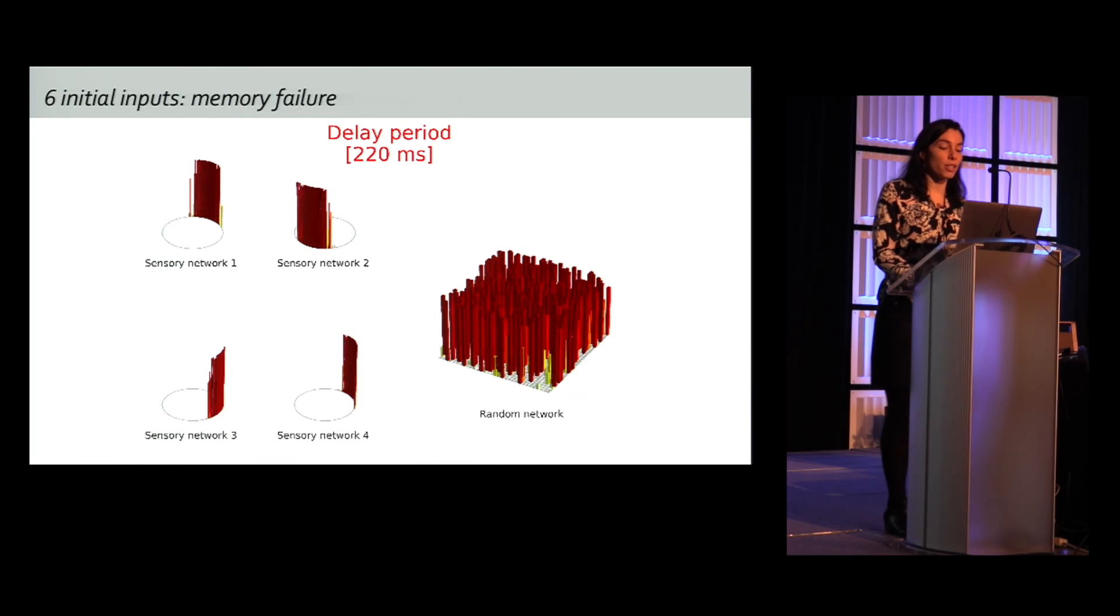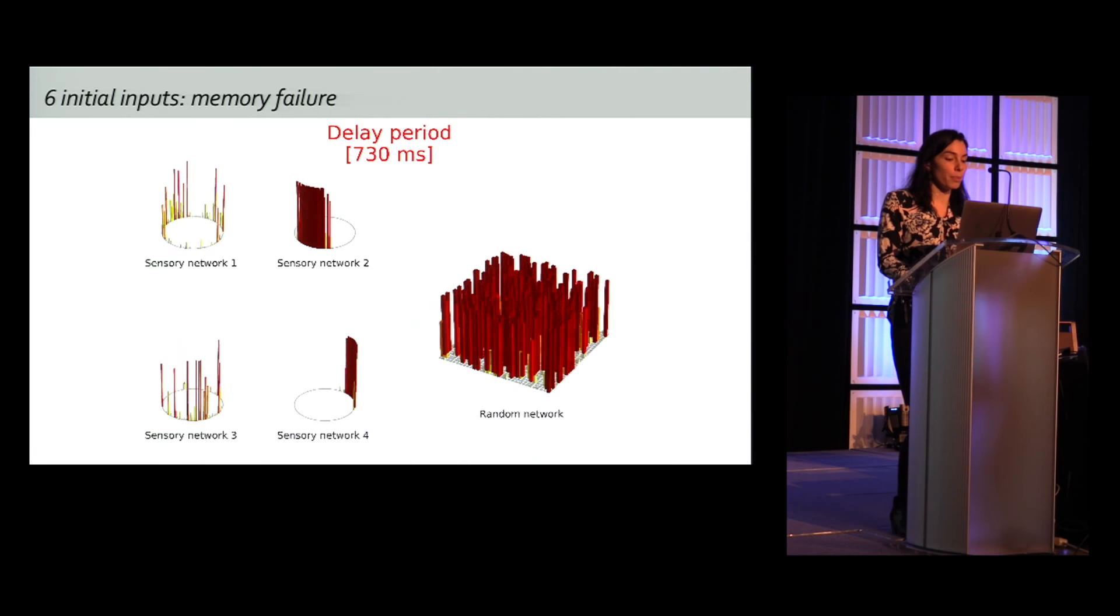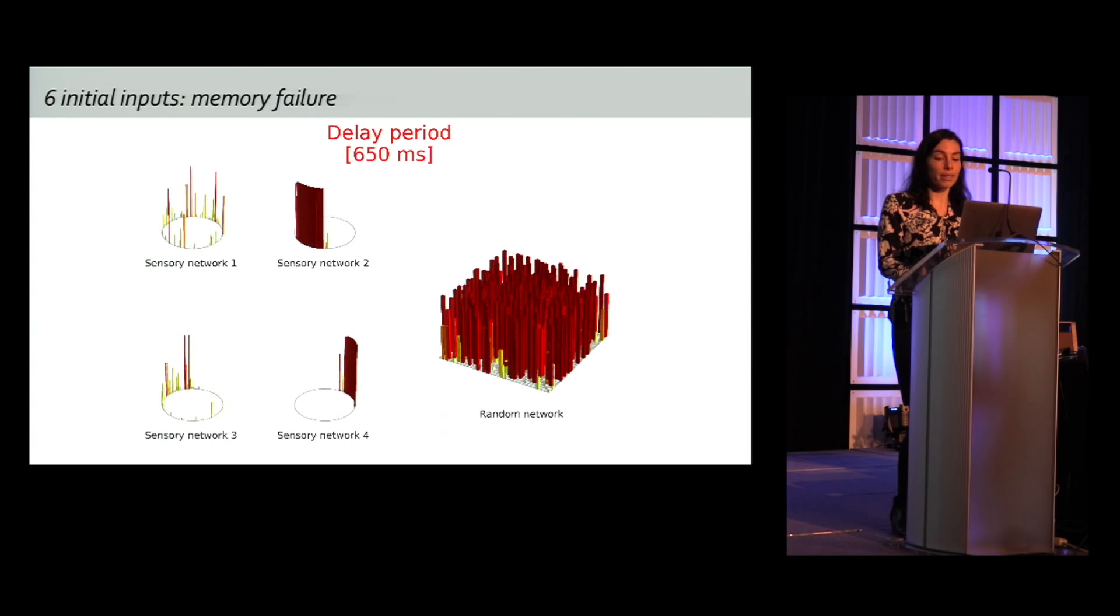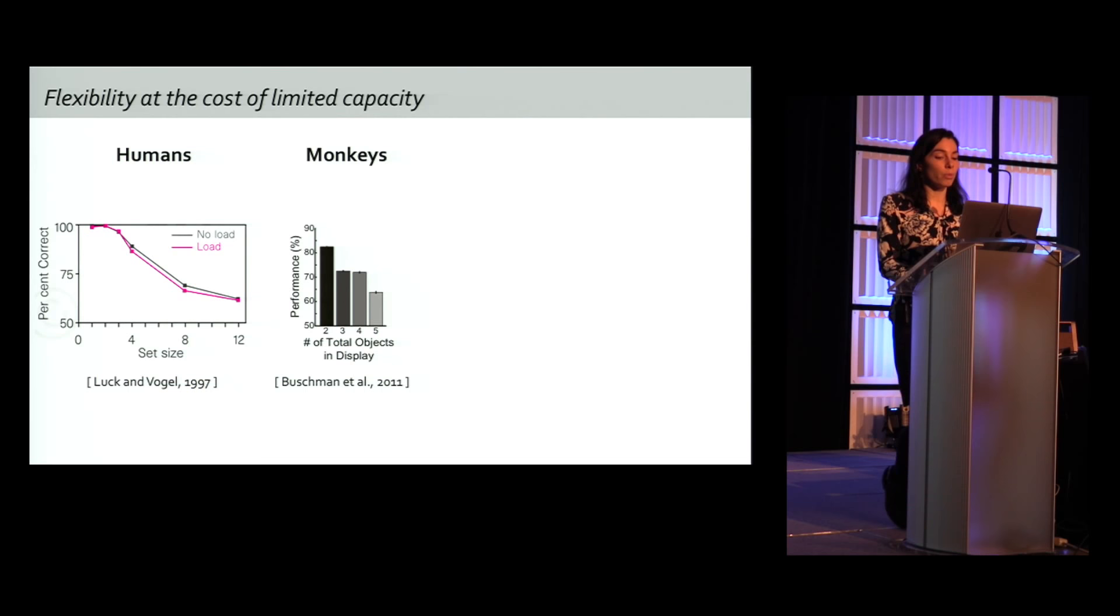Now, here is another simulation where I increase the initial load. Six out of eight of sensory networks now receive an input, and some memories are not maintained over time. For example, in sensory network one and three. So the capacity of the network is limited, and this is due to the interference of representation in the random network.